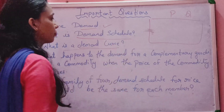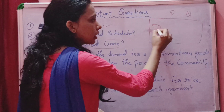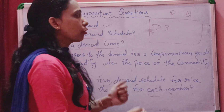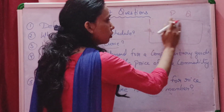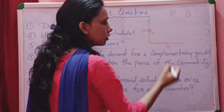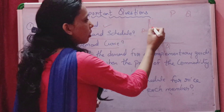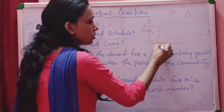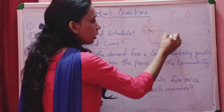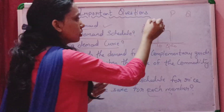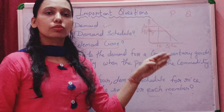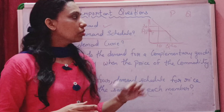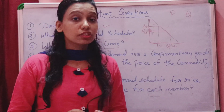The third question is: what is the demand curve? When you make a demand schedule, you can also make a demand curve. In a demand curve, you show price on the y-axis and quantity on the x-axis. For example, if the price is 20, then the quantity demanded is 10; if the price is 10, then the quantity demanded is 20. This shows that when price increases, demand decreases, and when price decreases, demand is higher — hence the curve slopes downward, showing the inverse relationship.